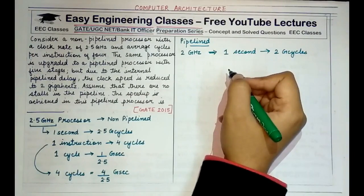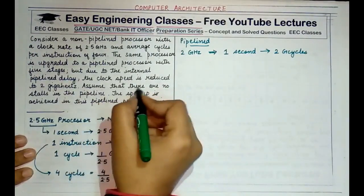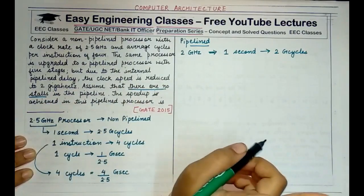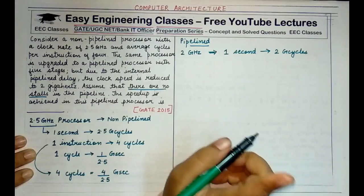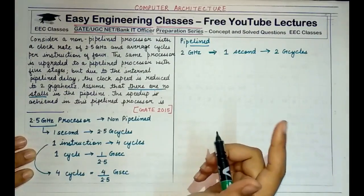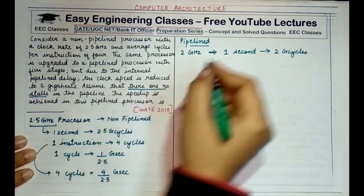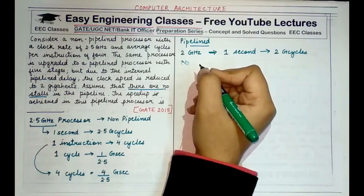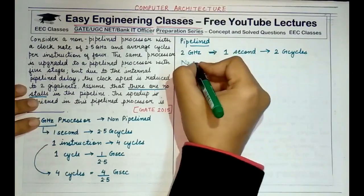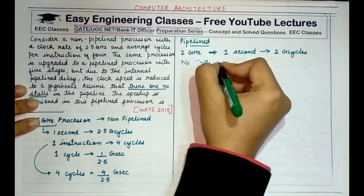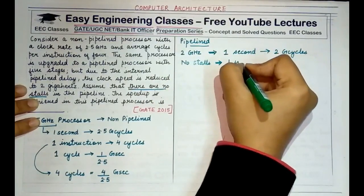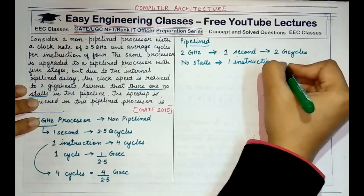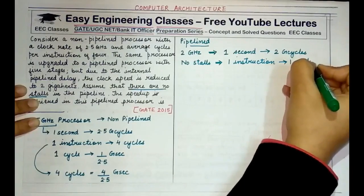It is also specified that there are no stalls. This means that a single instruction only takes one cycle — very important. When you are told there are no stalls in the pipeline, a single instruction which was previously taking 4 cycles will now take one single cycle to complete.